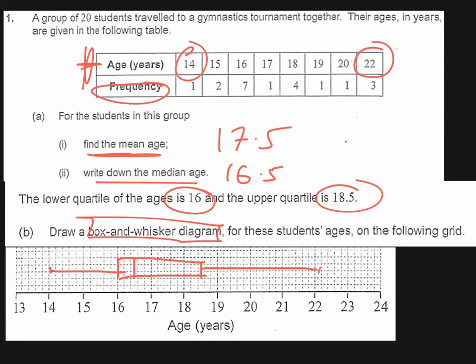So we can label those if we want the exact values, but the key thing is the structure. You've got the median here. This is the lower quartile and the upper quartile.